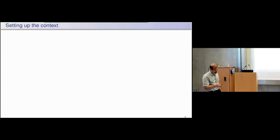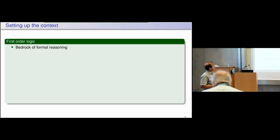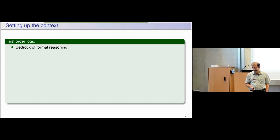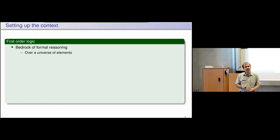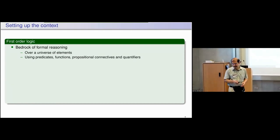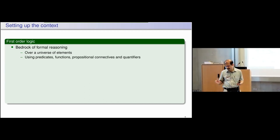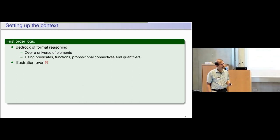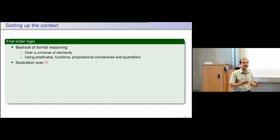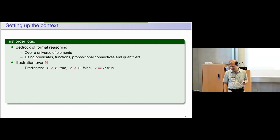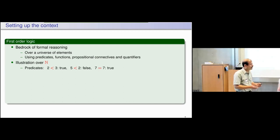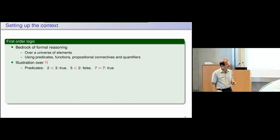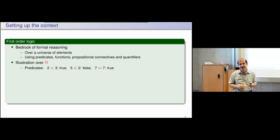Setting up the context: first order logic is of course a bedrock for formal reasoning. Given a formula in first order logic, we interpret it over a universe of elements with given interpretations of predicates, functions, propositional connectives, and quantifiers. To warm up, let us say the universe over which we want to express some properties is the natural numbers, and we have a less-than predicate and an equality predicate.